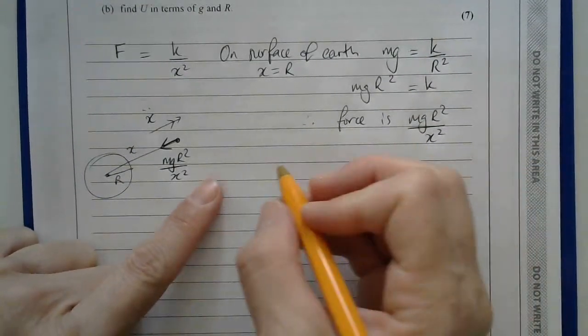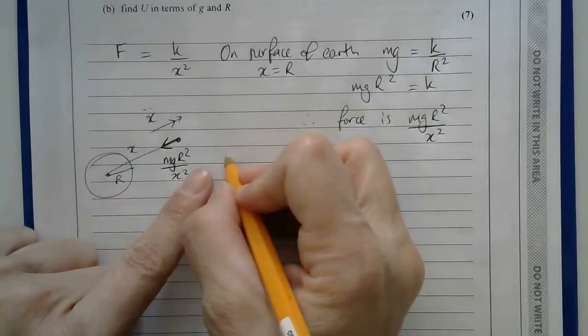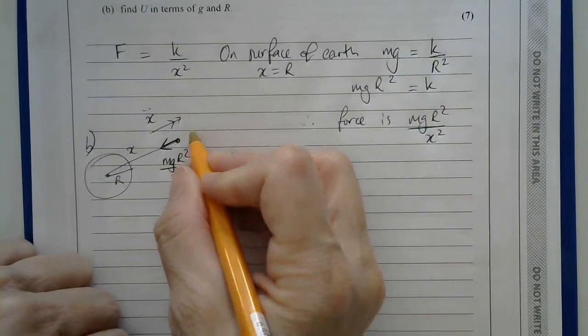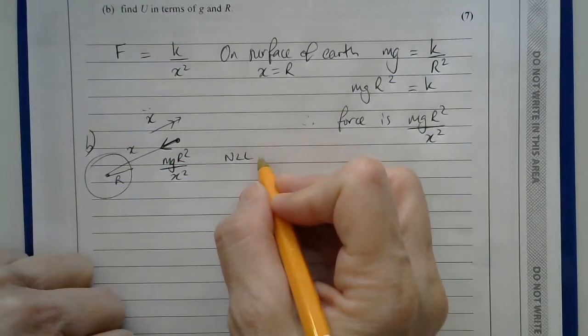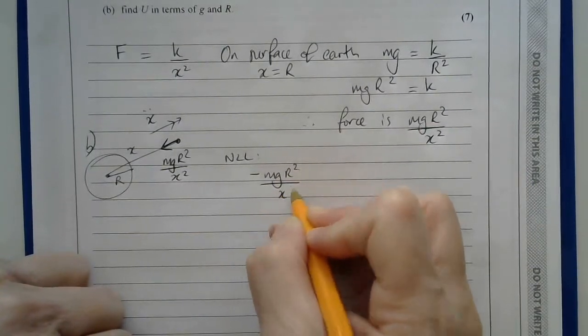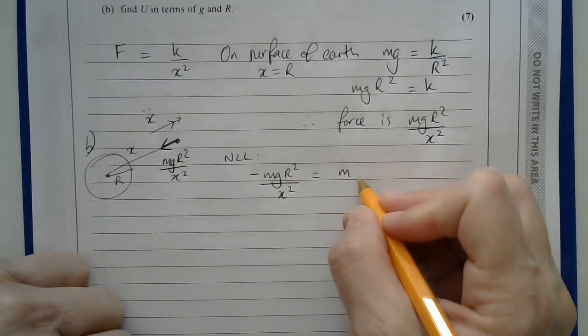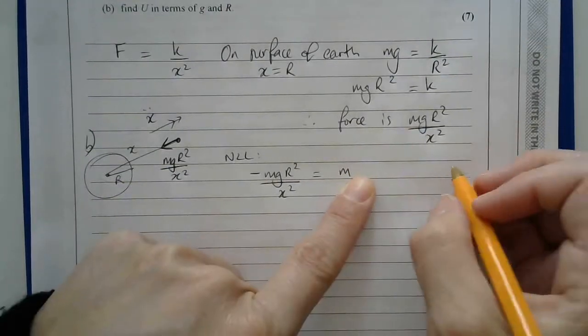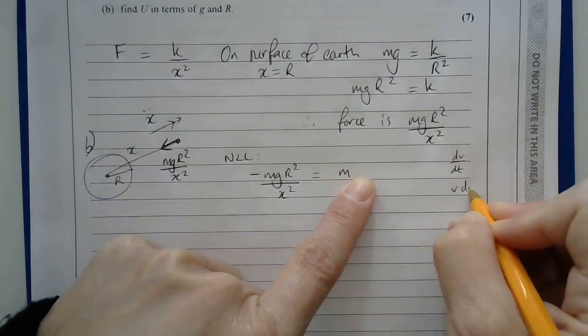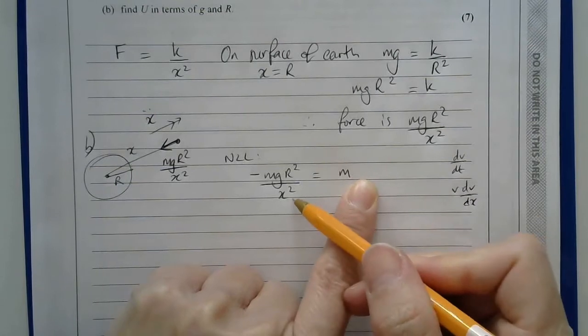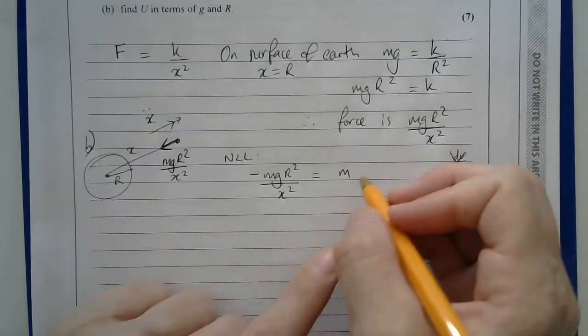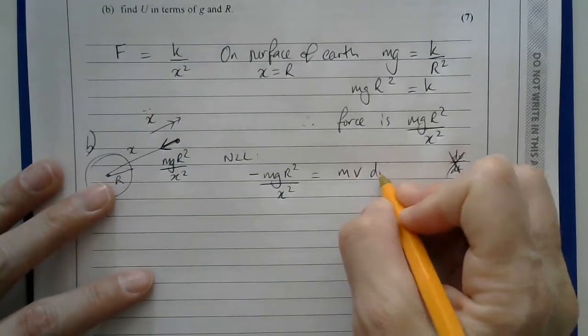And I can therefore write down, using Newton's Second Law, that the forces away from the center of the Earth, which is nothing, minus the force towards the center of the Earth, equals the mass times the acceleration. Now, for the acceleration, I could use dv by dt, or I could use v dv by dx. And in this case, as they've given me this force in terms of x, it's a much better idea to use this. So I have v dv by dx.